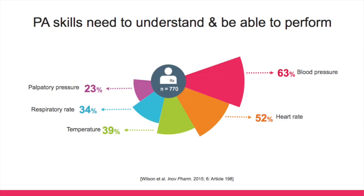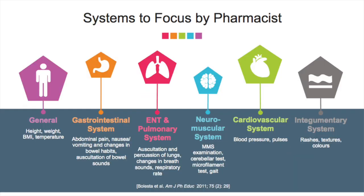Common physical assessments conducted by pharmacists include measuring blood pressure, heart rate, temperature, respiratory rate, and palpatory pressure. The usual systems to be focused on include general, gastrointestinal system, ear, nose and throat, pulmonary system, neuromuscular system, cardiovascular system, and integumentary system.